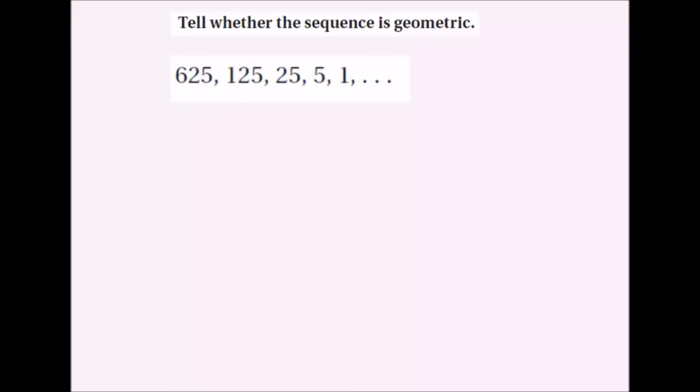In this section we're talking about geometric sequences, which are different from arithmetic sequences. For a geometric sequence, you know it's geometric if the ratio between the terms remains the same. So if the ratio between these two numbers, and these two, and these two, and these two, if those remain the same then it's a geometric sequence.